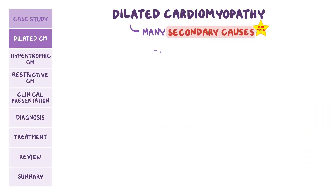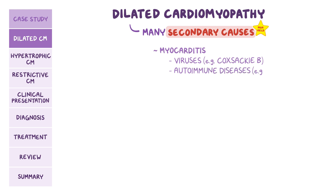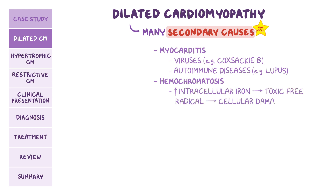Another cause is myocarditis, which is inflammation of the heart muscle, usually caused by viruses like Coxsackie B, but can also be related to autoimmune diseases like lupus. Hemochromatosis is a disorder of iron overload in which excessive iron can be deposited in many organ sites, including the cardiac muscle. Too much intracellular iron can act as a toxic free radical, resulting in cellular damage.